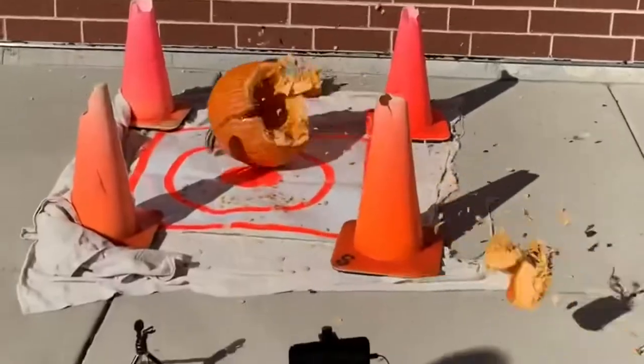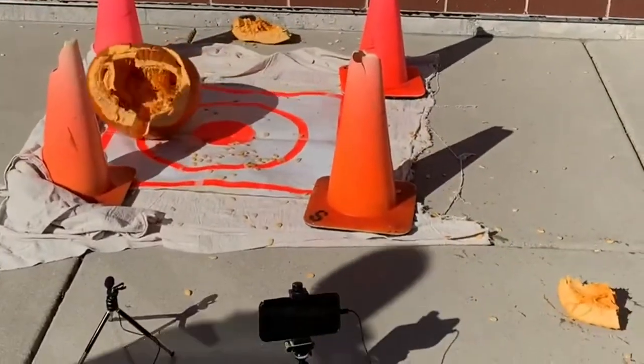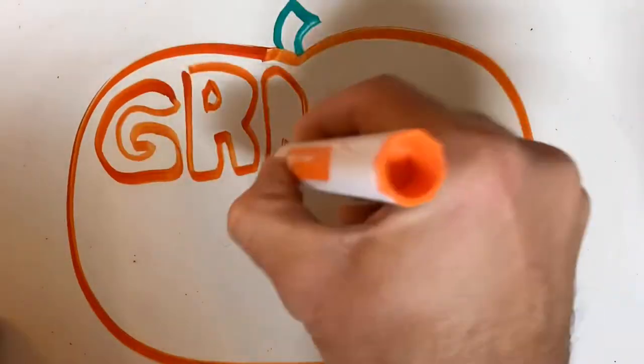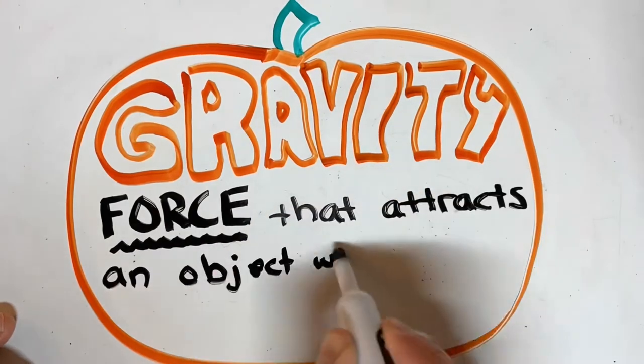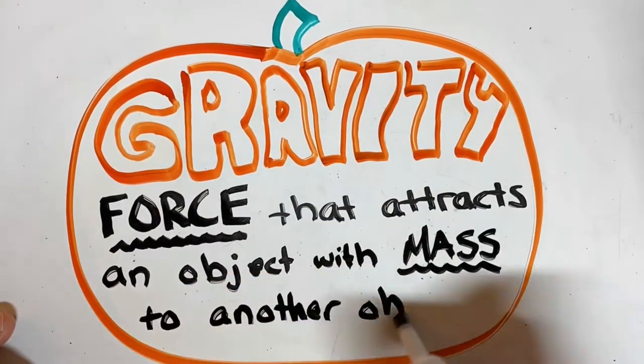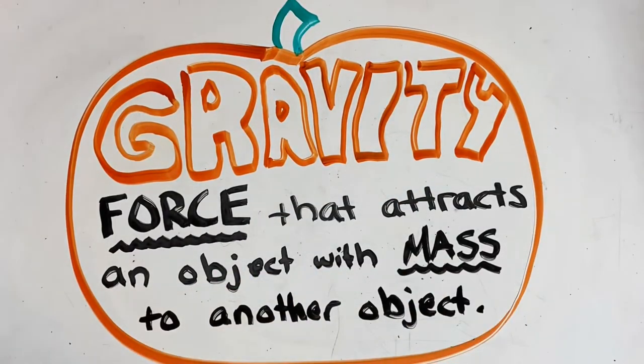Now gravity is the reason that the pumpkins fall off the roof. Everybody knows that, but have you ever thought about what's really happening there? Let's start by defining gravity. Gravity is the force that attracts one object with mass to another object with mass.